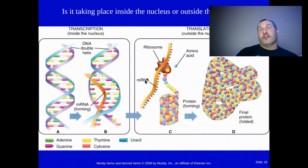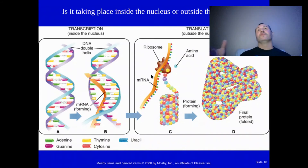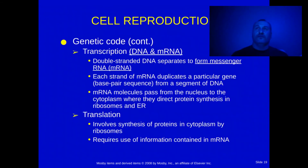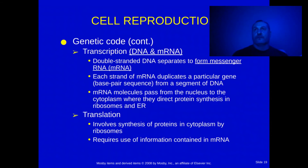The ribosomes come into play when you have the mRNA messenger — the protein factory makes new DNA to restore that section of the body. Transcription involves DNA and mRNA; mRNA stands for messenger RNA. Make sure you're noting anything underlined — transcription is DNA to mRNA.